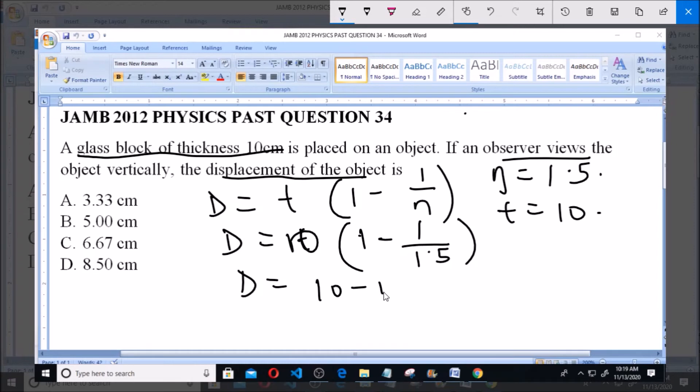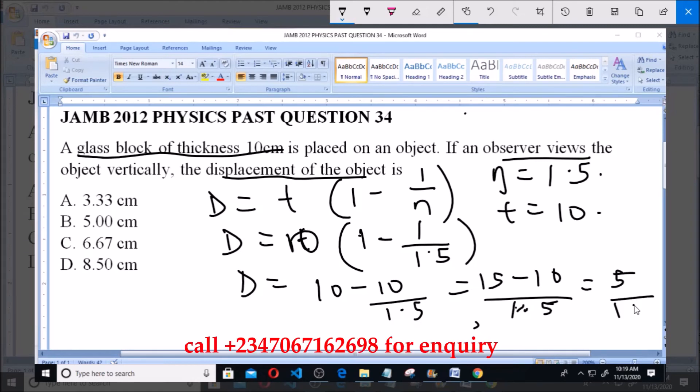That is equal to 10 - 10/1.5. This is equal to (15 - 10)/1.5, and that equals 5/1.5.